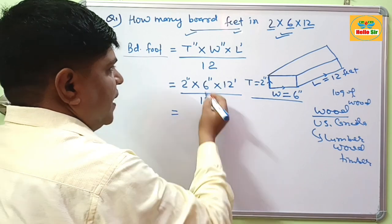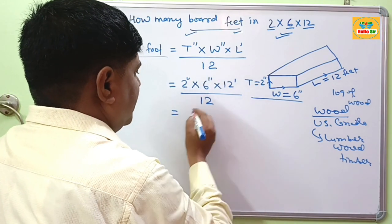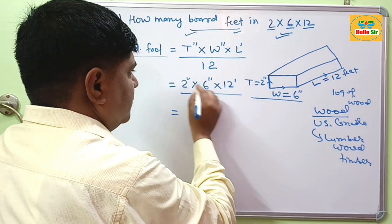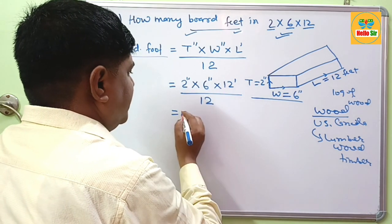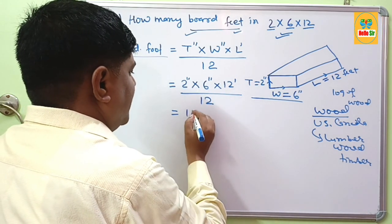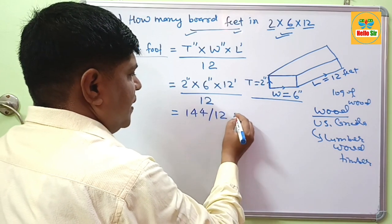By this solving method, you easily solve this by multiplying 3 dimensions, you get 144. And this will divide by 12.